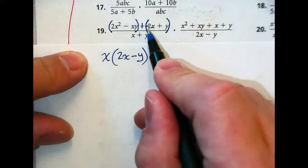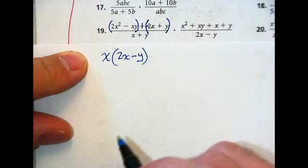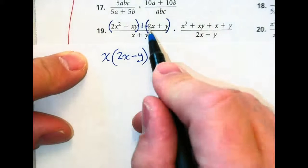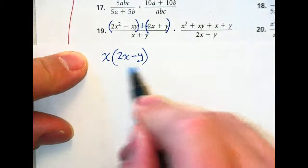And then here, can I take anything out of negative 2x and y? No. But notice this negative 2x plus y is very close to this.